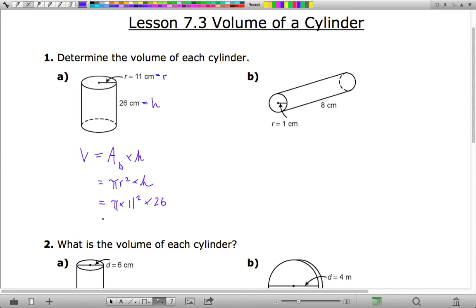Now you can use 3.14 for pi, multiply by that by 11 and square it, and then multiply by 26. Now if you do that on a calculator, you should get 9,878.44 cubic centimeters.